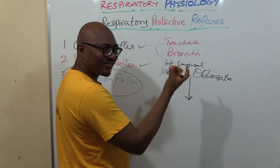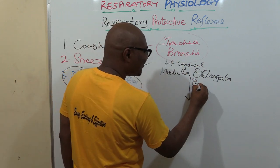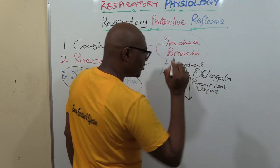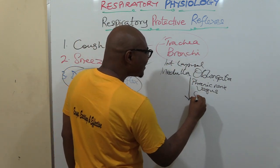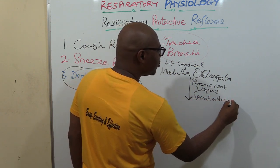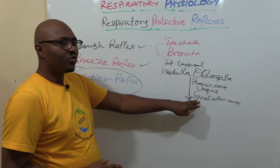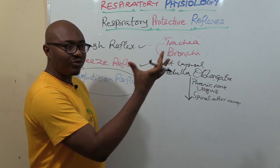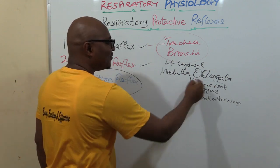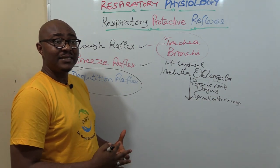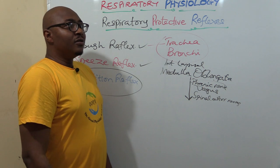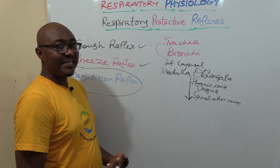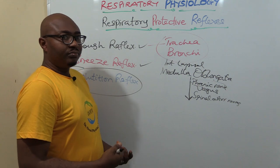The medulla oblongata then sends efferent signals through efferent nerves. These include the phrenic nerve, the vagus nerve, and spinal motor nerves. These nerves go to supply the muscles that will bring about forceful expulsion of air. The phrenic nerve innervates the diaphragm, which is the major inspiratory muscle, so first you take in a deep breath when you want to cough.